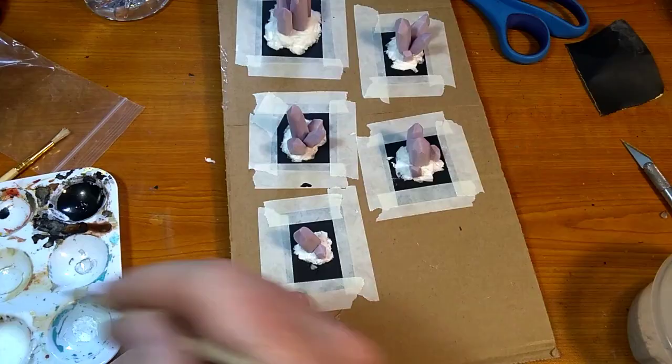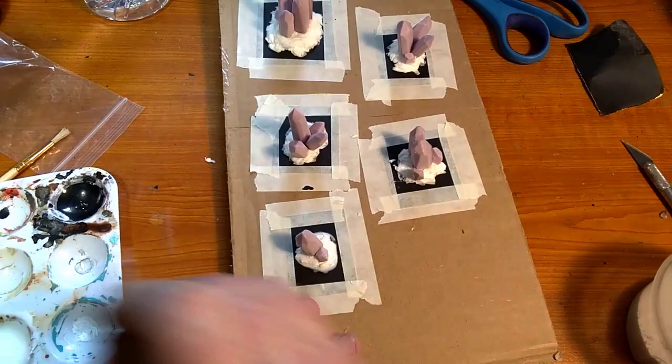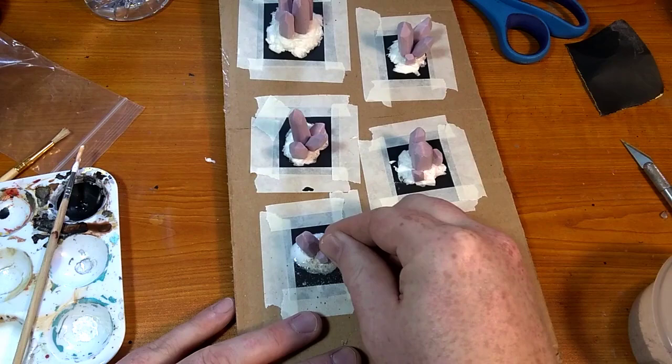Now I dilute some tacky glue with a little bit of water and start adding the glue to the base with a cheap brush. I make sure to paint the glue over the base onto the construction paper. This will help the base more and give the edge the low profile we are going for.